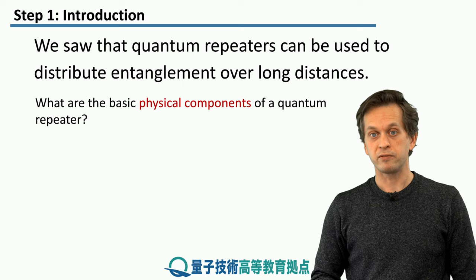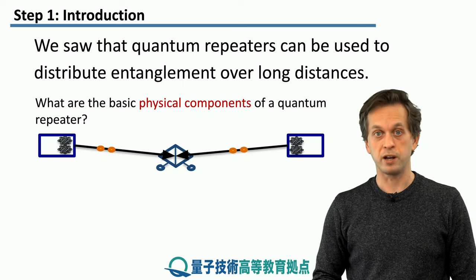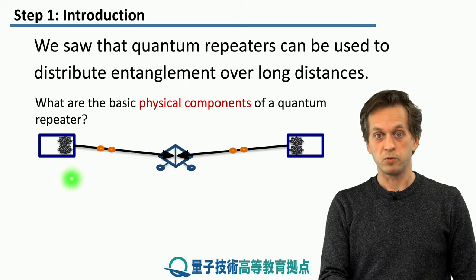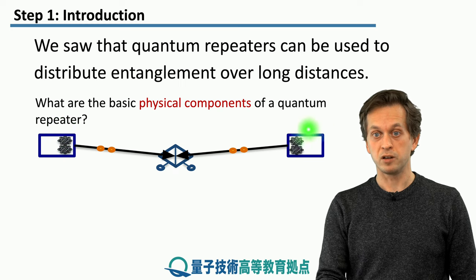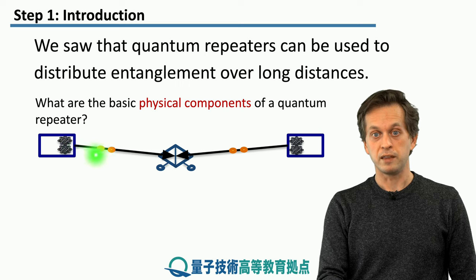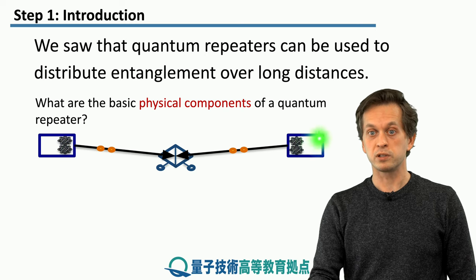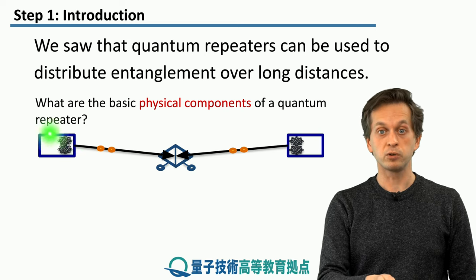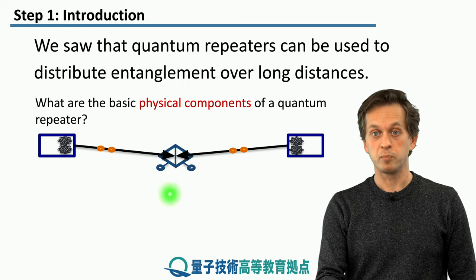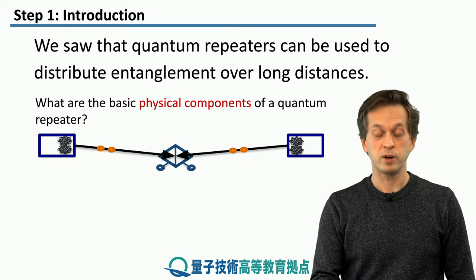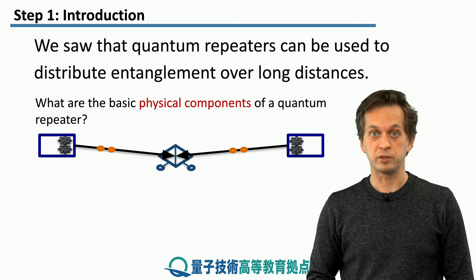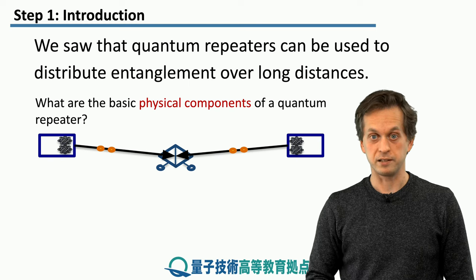So here we have a basic scheme for a quantum repeater. We've got our network nodes represented by these blue boxes over here and they have some qubits. The network nodes fire photons towards this middle node here, which implements a bell state measurement. And that way we can establish entanglement over long distances.